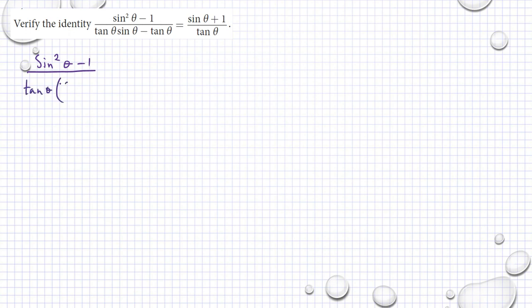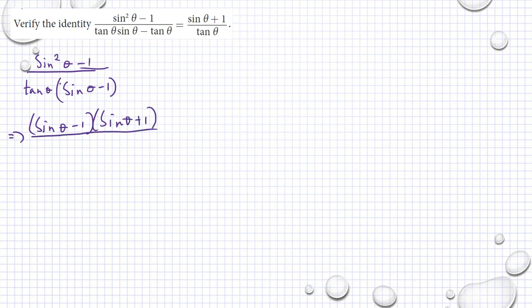We look for a common factor. We have sine theta minus 1. This is a difference of two squares, so we get sine theta minus 1 times sine theta plus 1, divided by tangent theta, multiplied by sine theta minus 1.